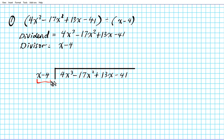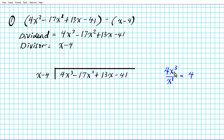We look at the binomial divisor and the first two terms of our dividend and ask: how many times does x go into 4x³? We divide 4x³ by x. X has the first power, so subtracting exponents with the same base gives us x². So the result is 4x². We place 4x² above the x² column in the quotient.